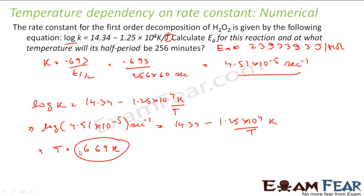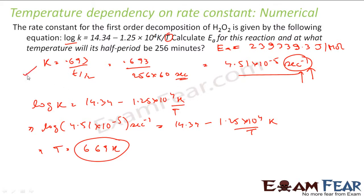One important note: when finding K, always convert to seconds — not minutes or hours — because the Arrhenius equation uses SI units throughout. R is in joules per mole per second, so K must be in per second for the units to cancel correctly. If K is left in minutes, the calculation will give the wrong answer.